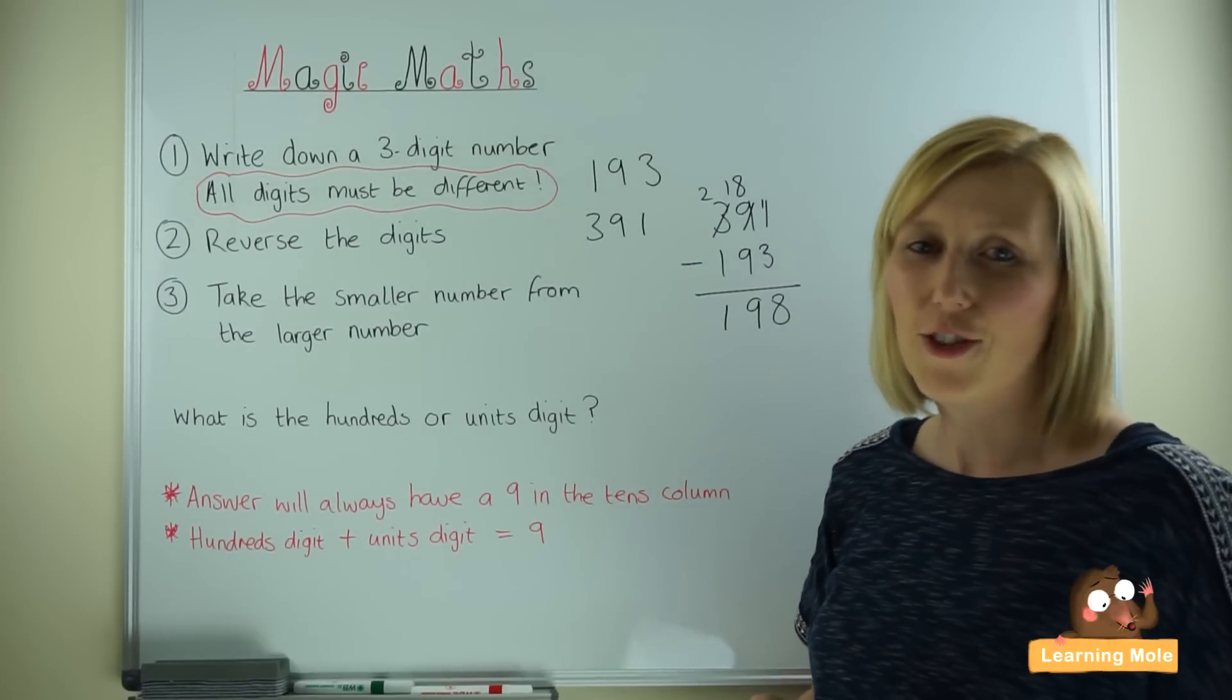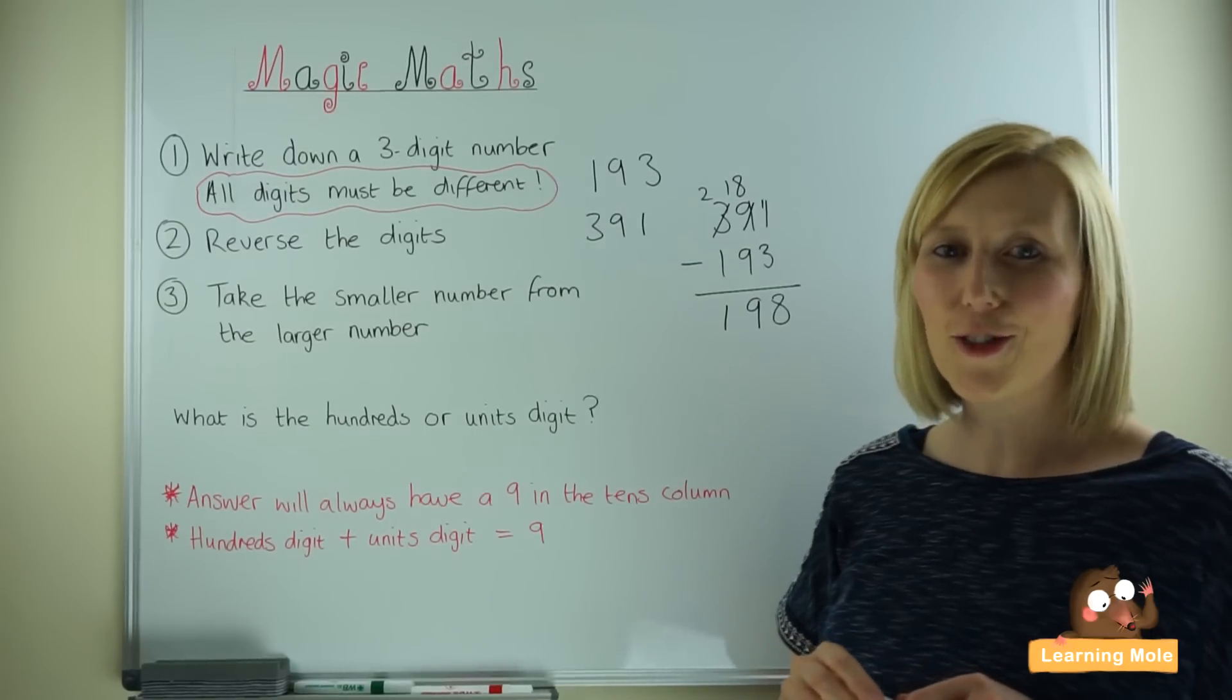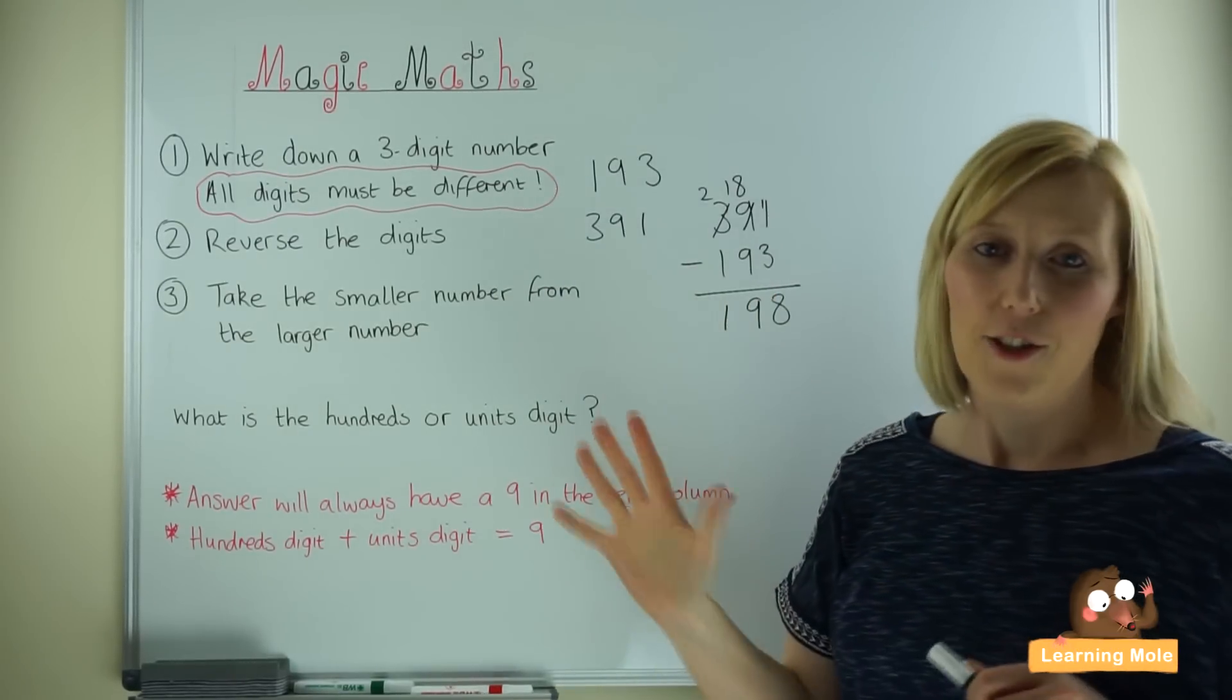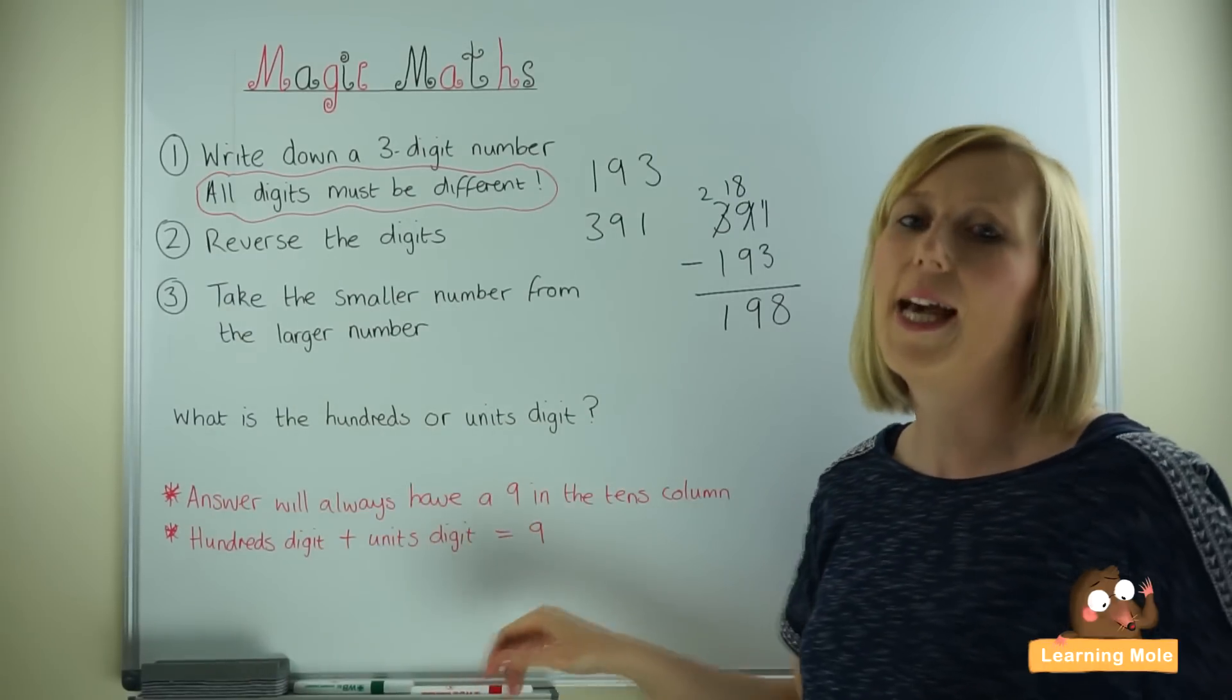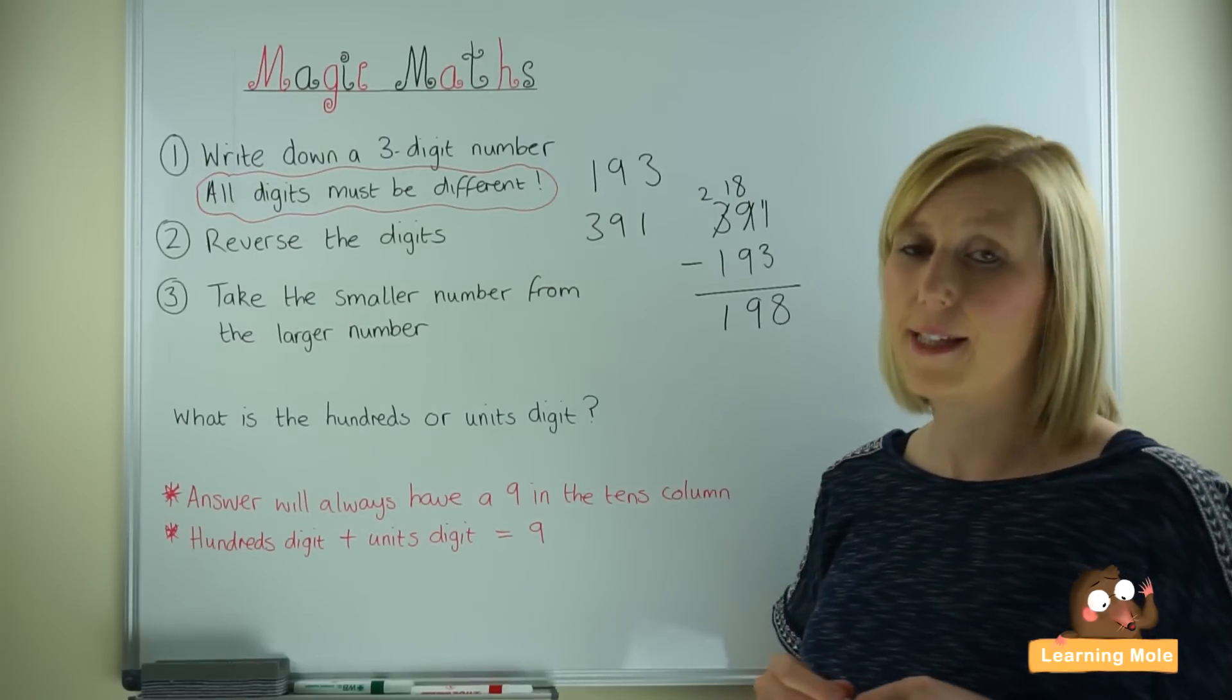This is the opportunity for your child to then calculate or work out or magic the answer. So this is their little formula that's going to help them calculate the answer. And this is a really good one for place value.